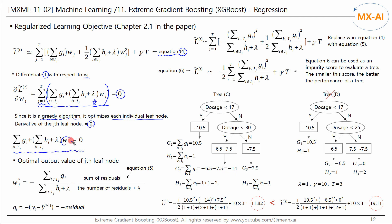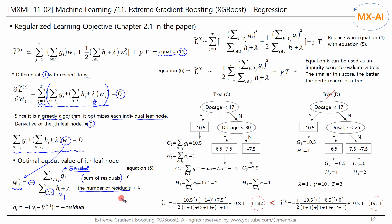Setting the derivative to zero and solving for w gives us the optimal w-star. Since g is the negative residual, the first negative sign cancels, and the numerator becomes the sum of the residuals. For regression, since h is 1, sigma-h becomes the number of residuals belonging to the leaf node. This is Equation 5 of the paper — the output value of each leaf node used in the previous video.